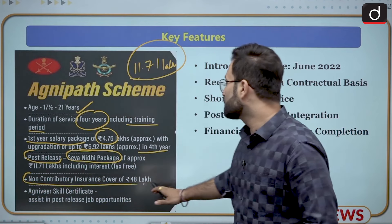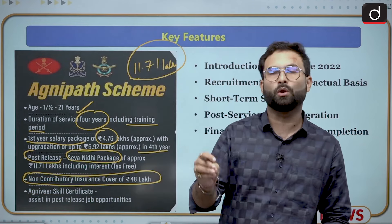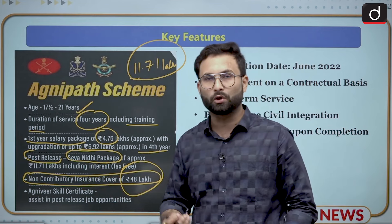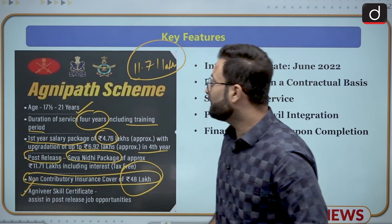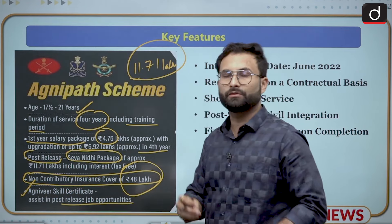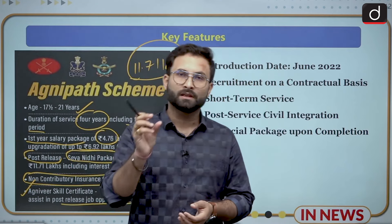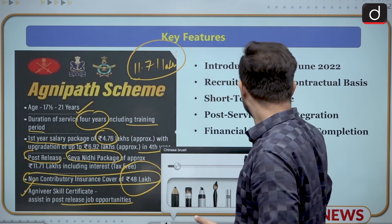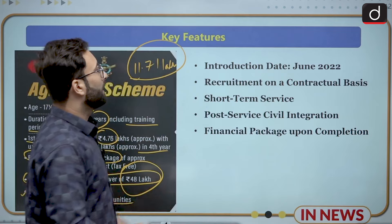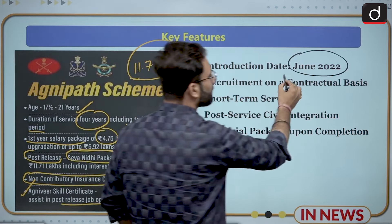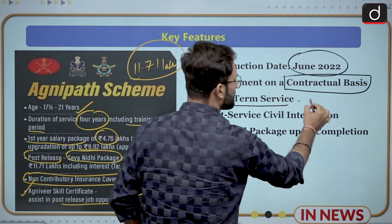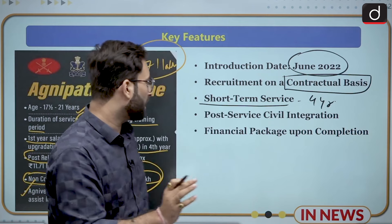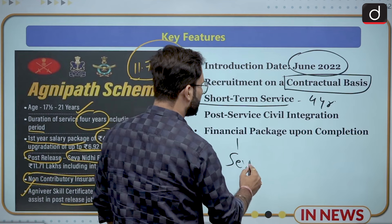There will be a non-contributory insurance cover of 48 lakhs — if something happens on the course of duty, this insurance covers 48 lakh rupees without any contribution required from the recruit. Agniveers will also be given an Agniveer skills certificate to assist post-release job opportunities in civil society. To summarize: introduced June 2022, recruitment on contractual basis, 4-year short-term service, post-service civil integration, and a financial package upon completion — that is the Seva Nidhi.